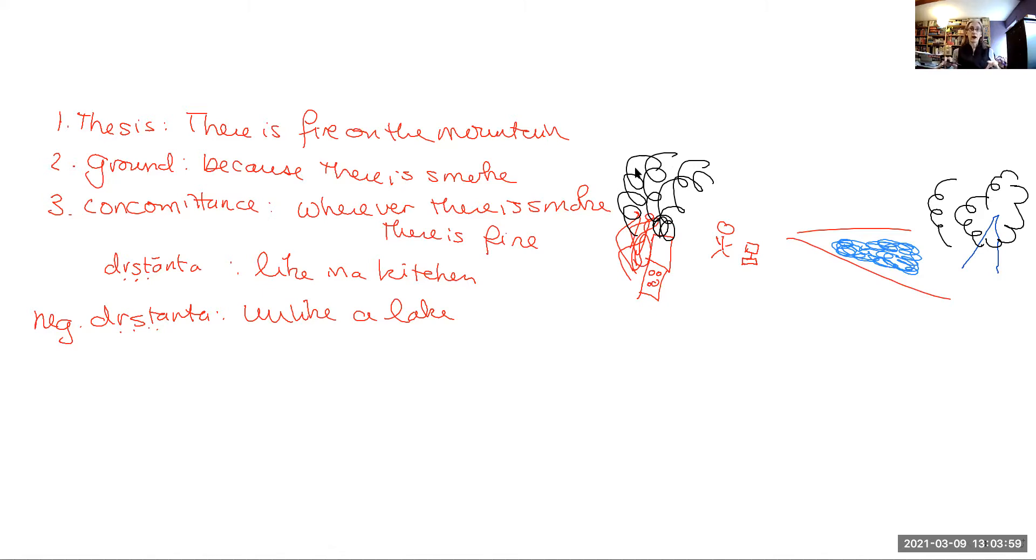As I said, this particular example is incredibly common. You find there is fire on the mountain because there is smoke all over the place. One interesting thing about this example is that you are not reasoning from fire to smoke because you can have fire without smoke. It's going essentially backwards, so not from cause to effect, but from effect to cause. Because we can see smoke, and we know that smoke comes from fire, by observing smoke on the mountain, we know that it has to be the case that there is, in fact, also fire.